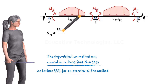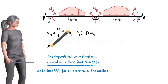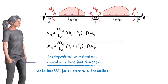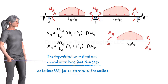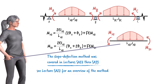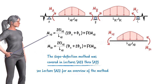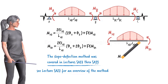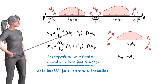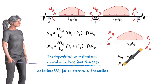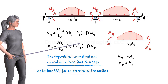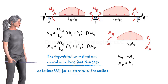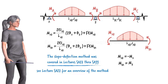The slope-deflection equations for segment AB can be written as shown. These equations are written based on the assumption that counterclockwise is the positive direction. Therefore, what we have labeled as MAB in this equation equals negative MA, and MBA equals MB. Please keep in mind that the last term in each slope-deflection equation is called the fixed-end moment, which can be defined using the loads applied to the beam segment.